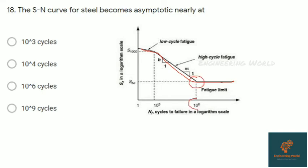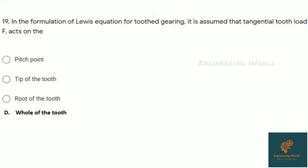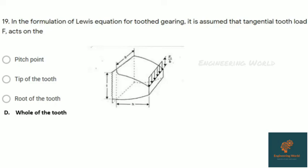Question nineteen: In the formulation of Lewis equation for toothed gearing, it is assumed that tangential tooth load F acts on the tooth. According to Lewis's assumption, he considered it as a cantilever beam, fixed at the base, with load acting at the end, that is, at the tip of the tooth.